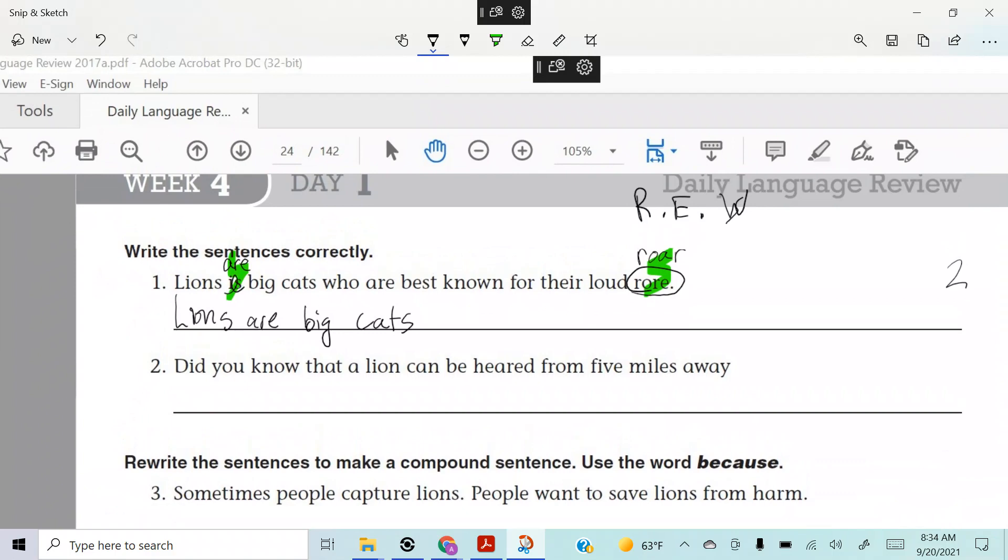Did you know that a lion can be heard from five miles away? What do we hear, Raina? Heard is incorrect. What should that be? H-E-A-R-D.